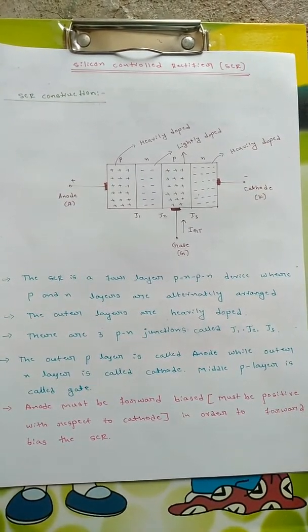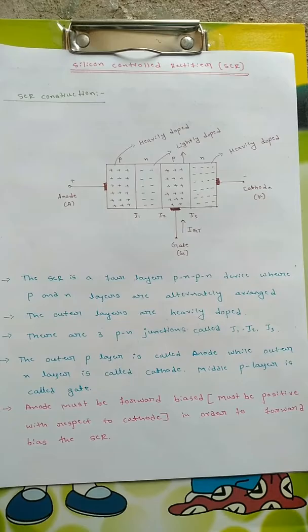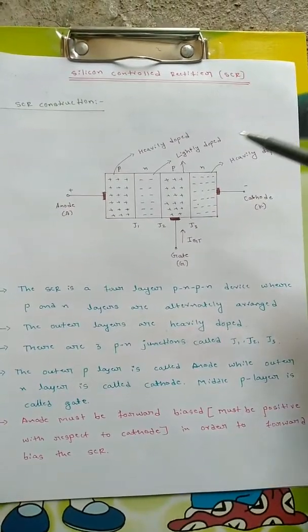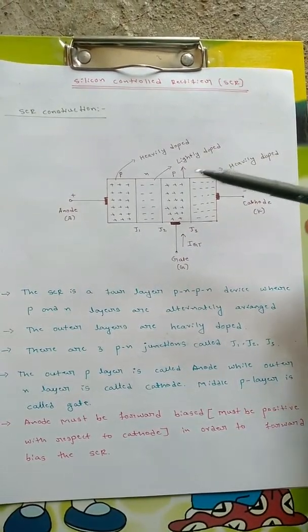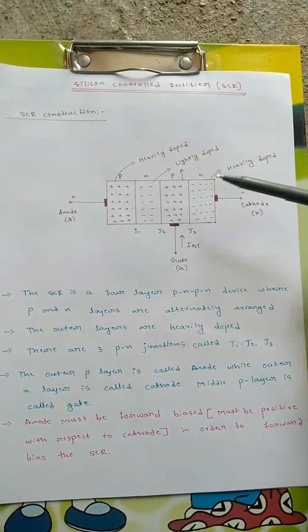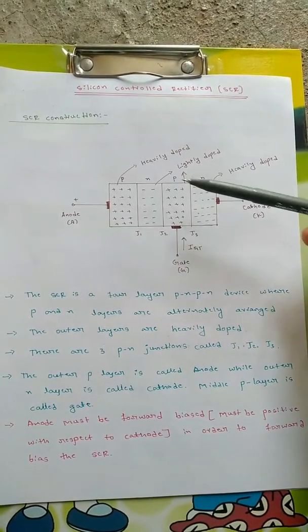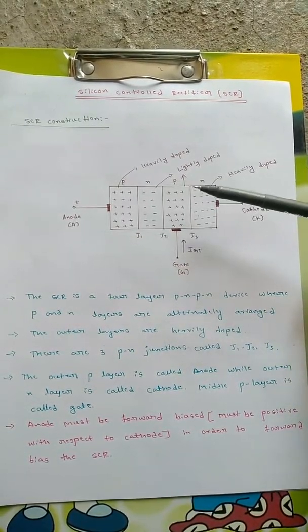First we will see the construction for SCR. The SCR consists of two layers of P and two layers of N, so there are totally four layers, two of each P and N layers.